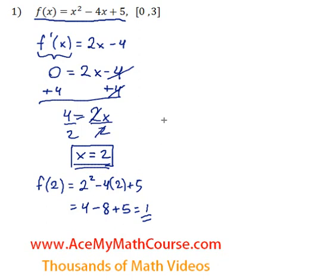So now we also want to calculate the values of f of 0 and f of 3. Because then we want to compare all the values and figure out what is the absolute maximum and what is the absolute minimum. So starting with f of 0,